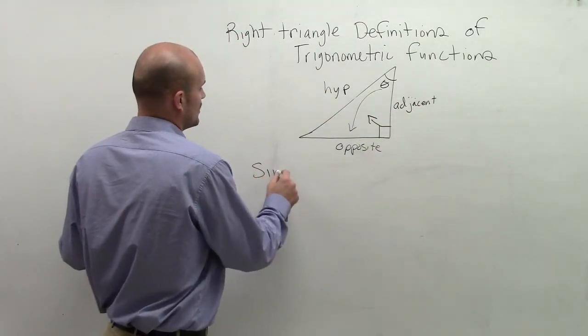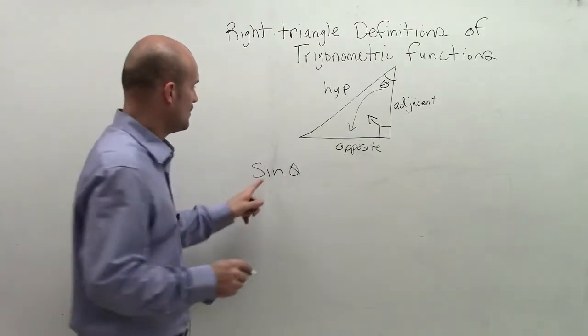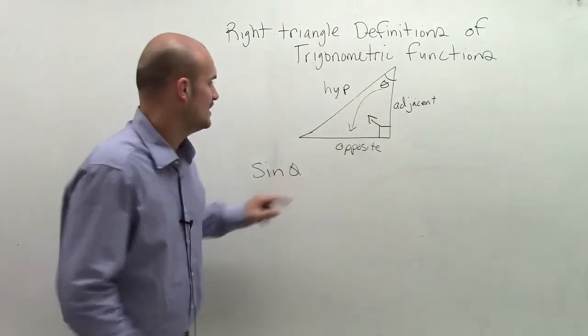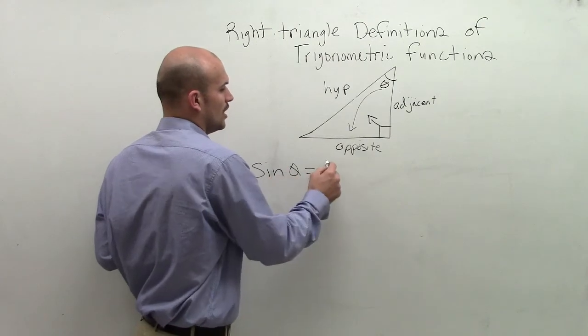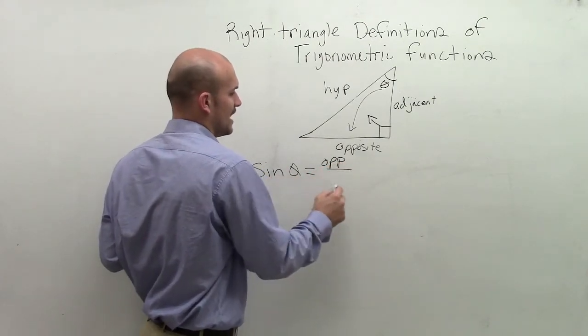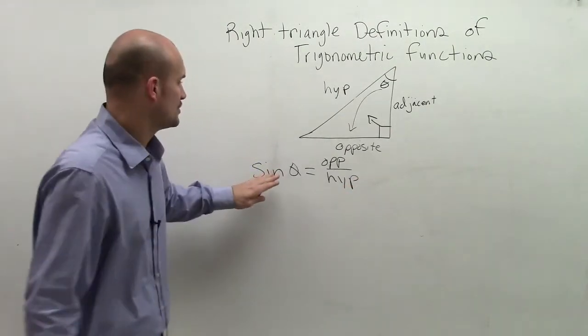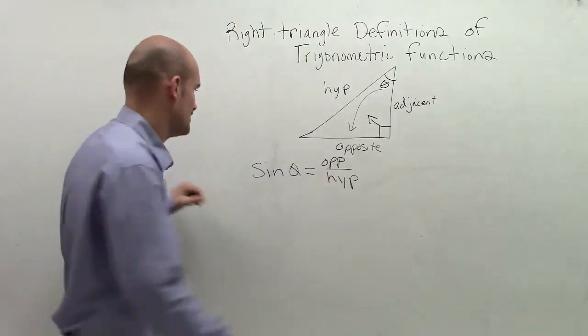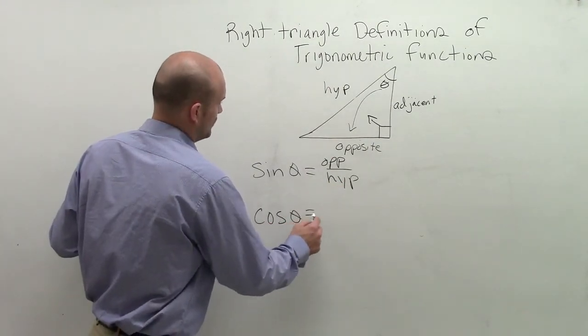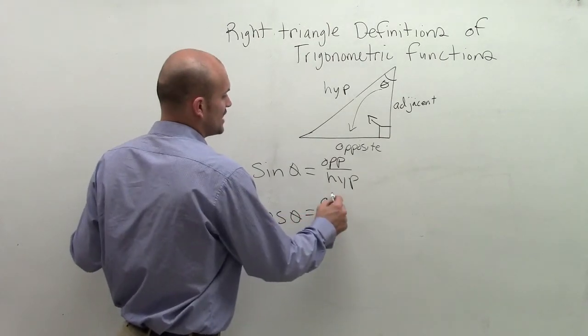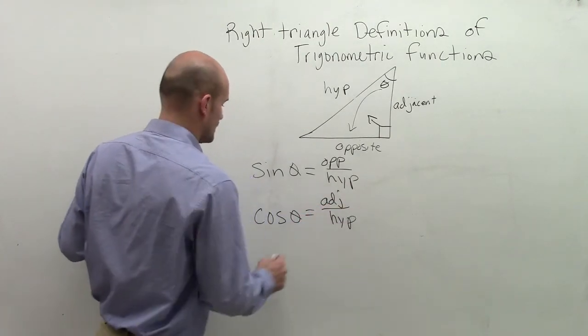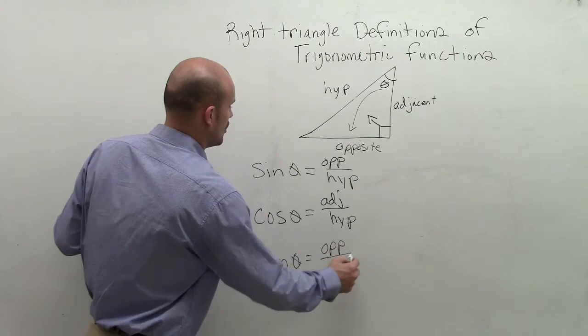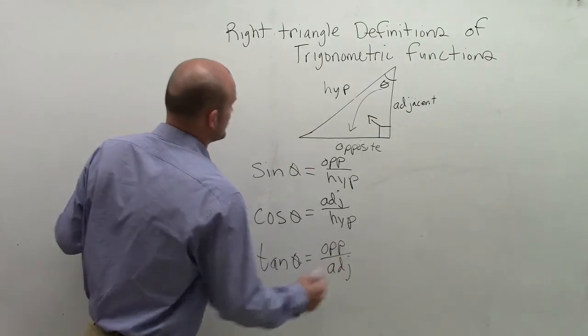So what we have is six functions we're going to work with. The sine of an angle theta is equal to the ratio of the opposite side divided by the hypotenuse. So my function of an angle is equal to the ratio of the opposite side divided by the hypotenuse. The cosine of an angle is equal to the ratio of your adjacent side over your hypotenuse. And the tangent of an angle is equal to the opposite side over your adjacent side of your triangle.